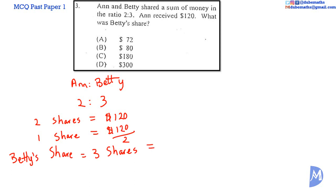It's equal to, we know what one share is, so we multiply by 3 to get 3 shares. 120 divided by 2 multiplied by 3, which is equal to $180. The answer is C.